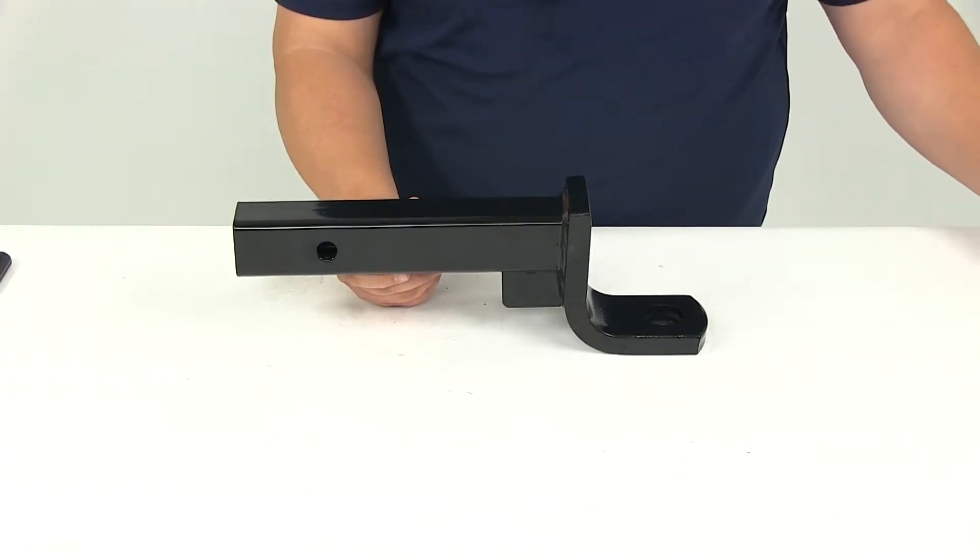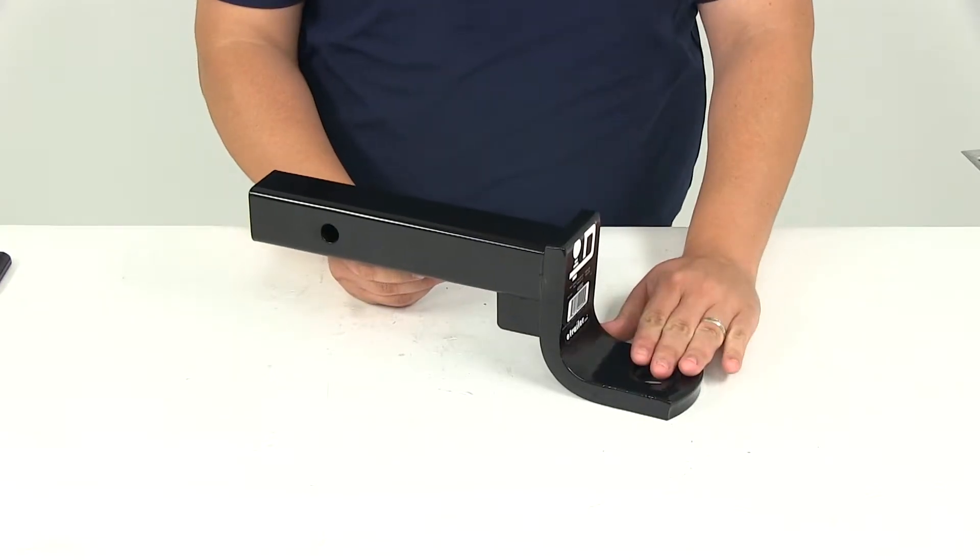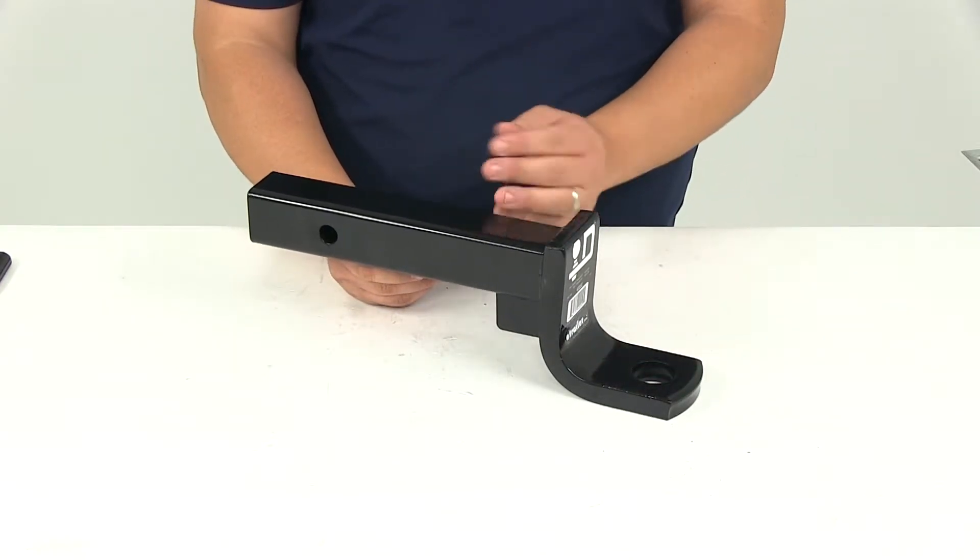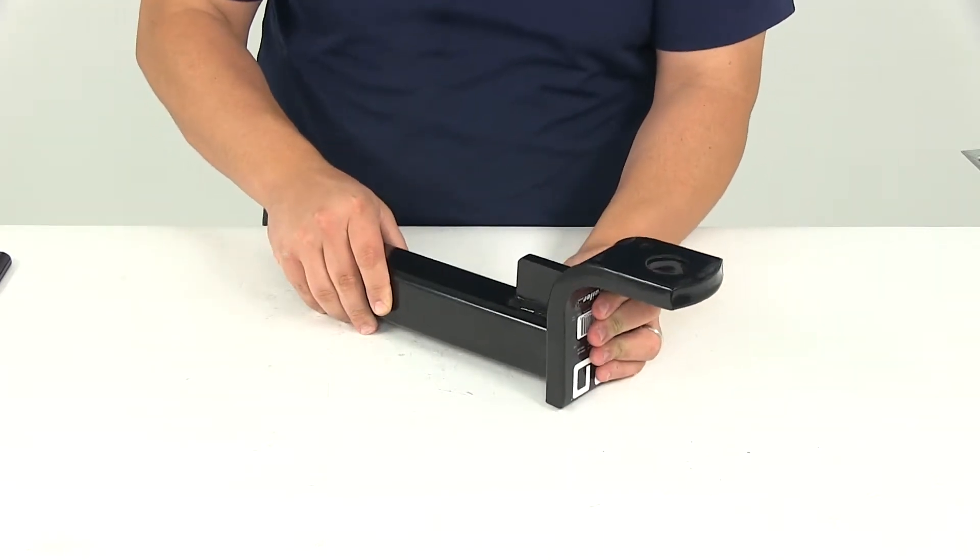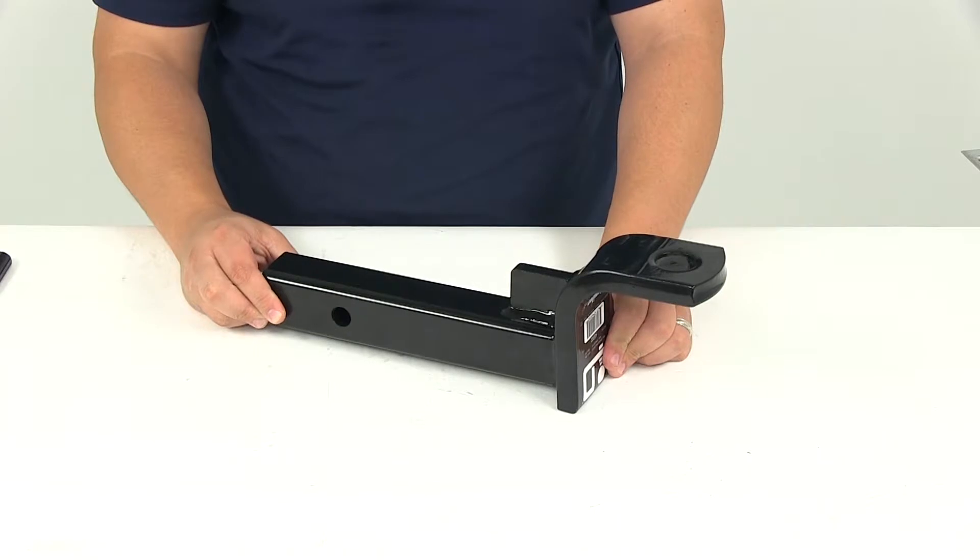When installed in the drop position it's going to provide a 4 inch drop measuring from the ball platform to the inside top edge of the receiver tube of the hitch. When installed in the rise position it's going to give us a rise of 2 and 3 quarters of an inch.